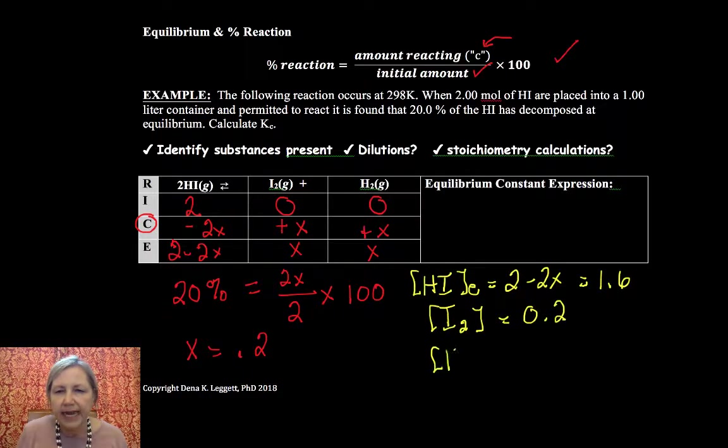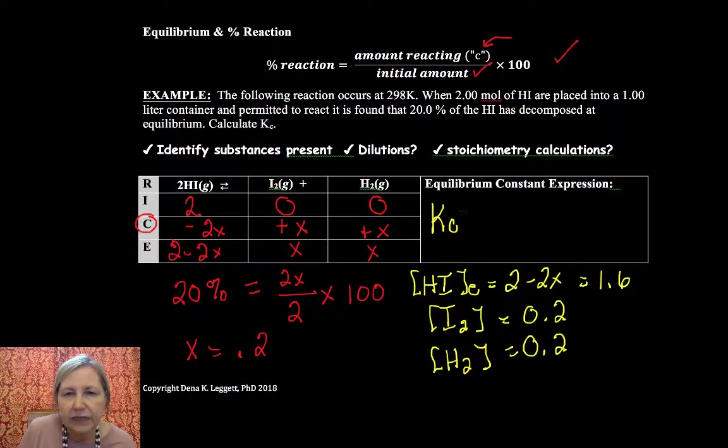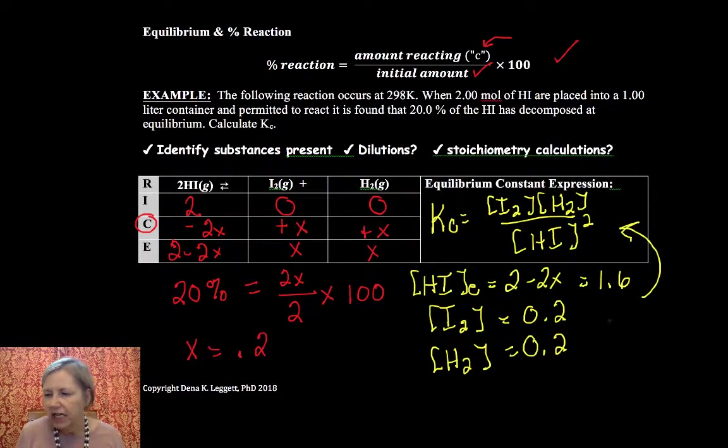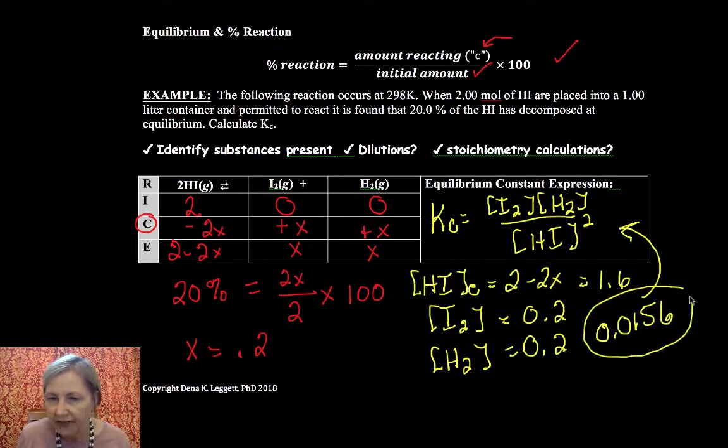And my I2 at equilibrium is x, so that's 0.2, and my H2 at equilibrium is also 0.2. If you set up Kc for this, it's I2 times H2 over HI squared. So if I plug my equilibrium values into Kc, you should get a value. If I've done my math right and you do your math right, I got 0.0156.